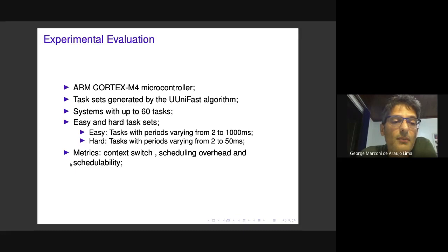We use three metrics for this evaluation: context switch overhead, scheduling overhead, and schedulability. We're checking the overhead from context switches, managing priority queues, executing scheduling functions, and deciding which task should run.